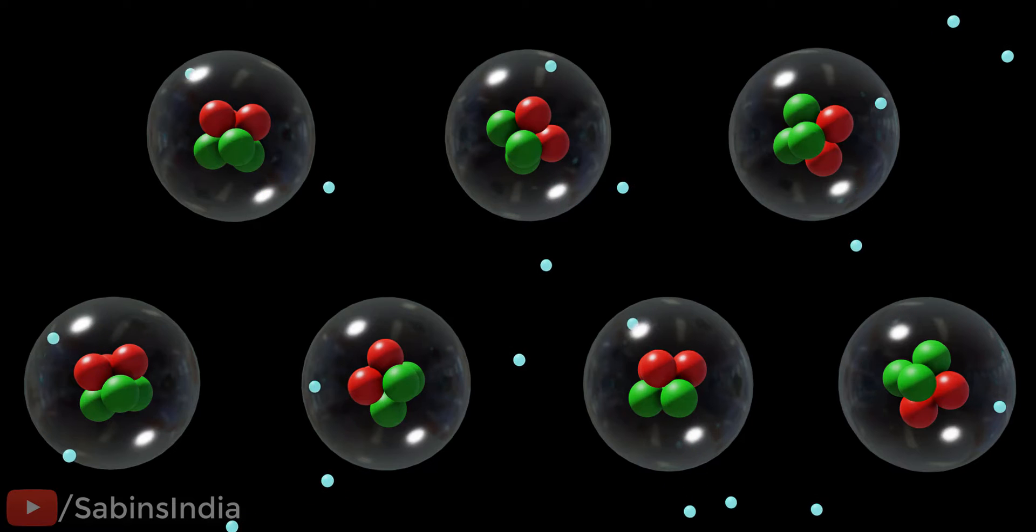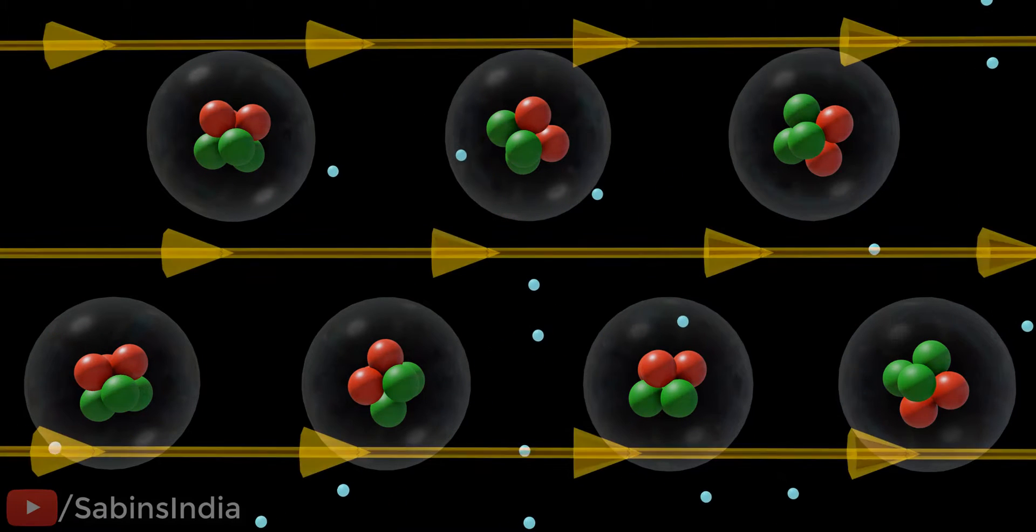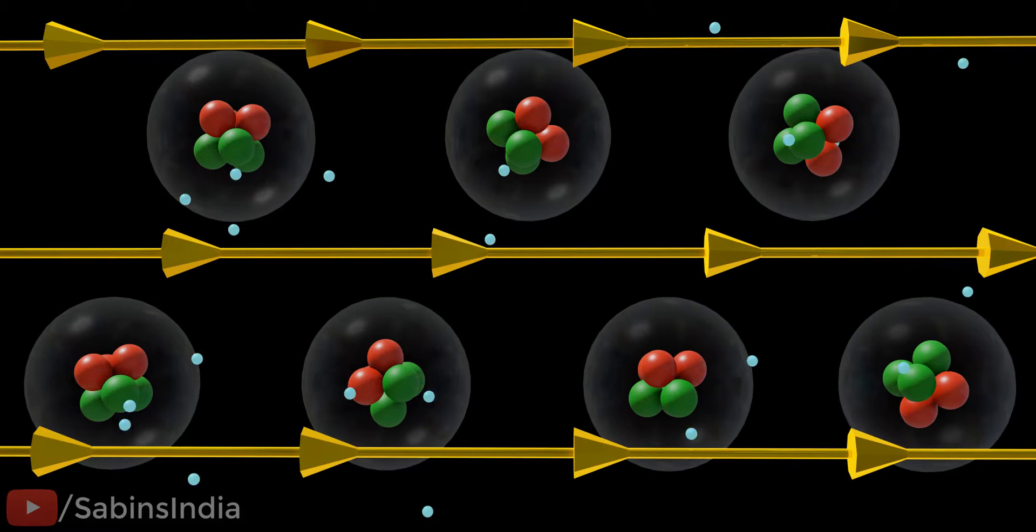This movement of electrons is completely random. If you calculate net electricity through an area, it will be zero. However, when you apply an electric field on the conductor, the electrons will start moving in a single direction with uniform speed.